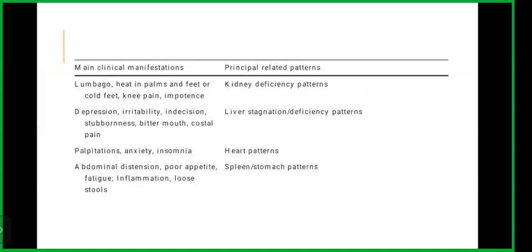When there are palpitations, anxiety and insomnia, those are heart patterns. Abdominal distension, poor appetite, fatigue, inflammation and loose stools indicate spleen and stomach patterns.